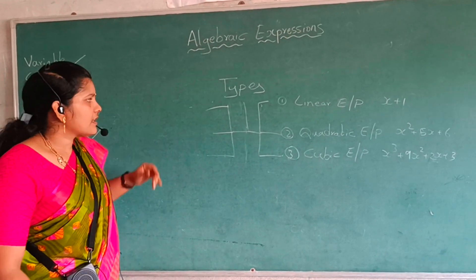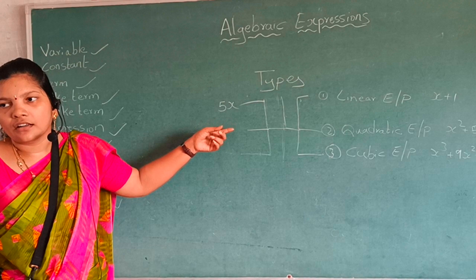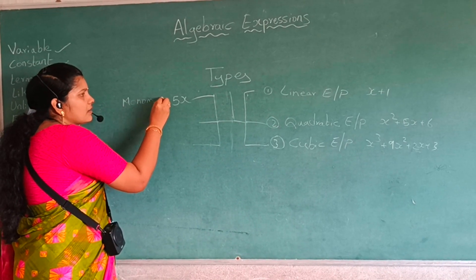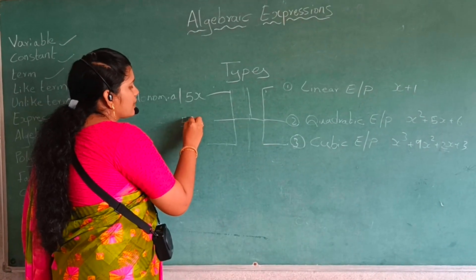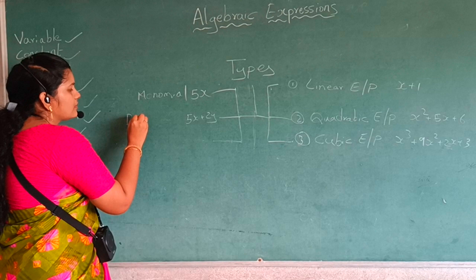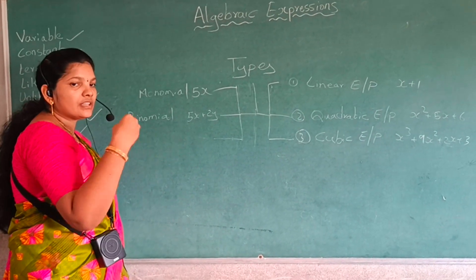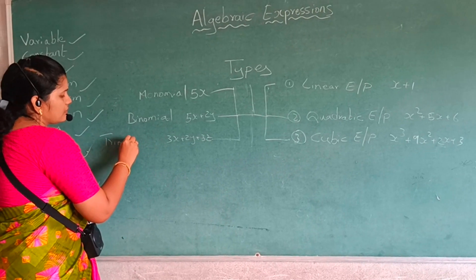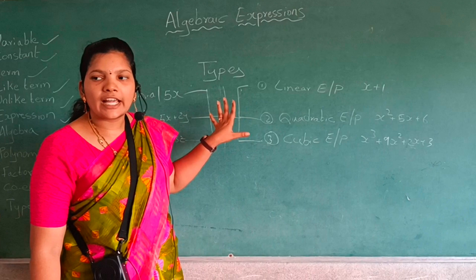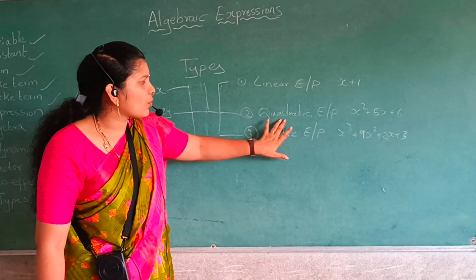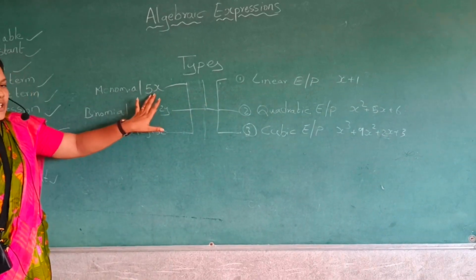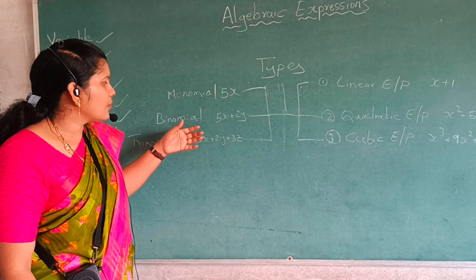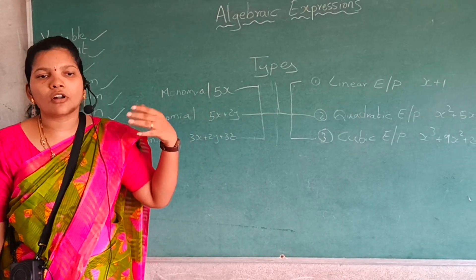On the other side, based on number of terms: if there is only one term, it is called a monomial. If there are two terms, for example 5x plus 2y, it is called a binomial. And if there are three terms, for example 3x plus 2y plus 3z, it is called a trinomial. If there are four or more terms, those are all called polynomials.